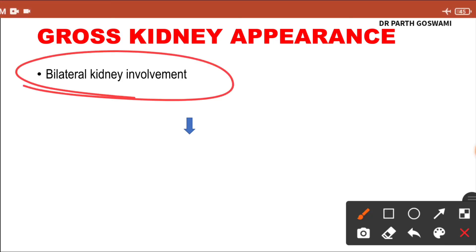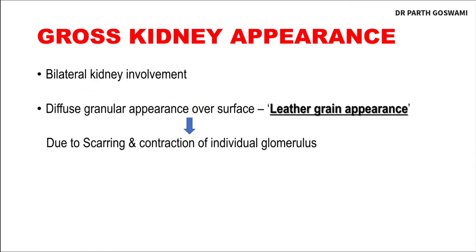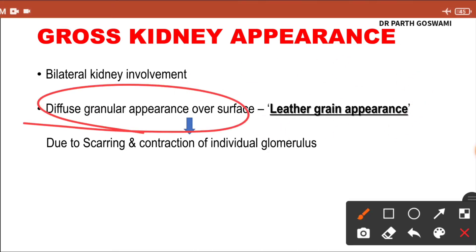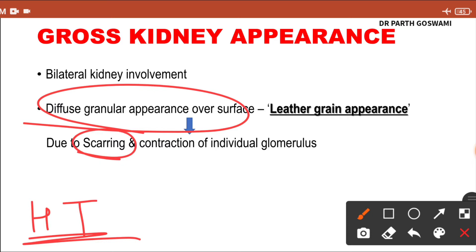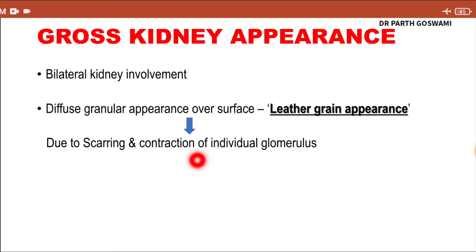If we talk about the gross morphological appearance of the kidney in nephrosclerosis, grossly there will be bilateral involvement because hypertension is a systemic disease and involves both kidneys. Over the kidney surface, you can see a diffuse granular appearance over the cortex — known as the leather-grain appearance. This is due to chronic hypertension leading to repeated damage to the blood vessel endothelium, chronic inflammation, and scarring and contraction of individual glomeruli.